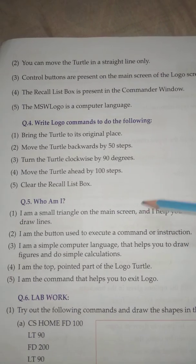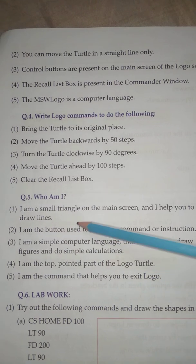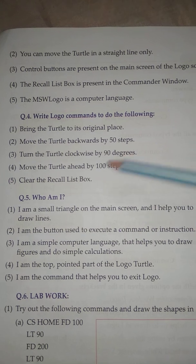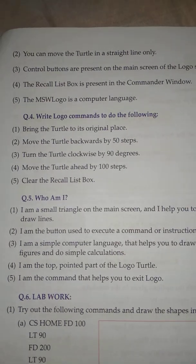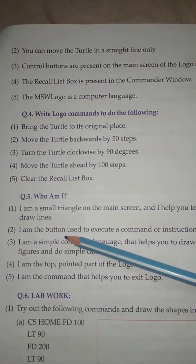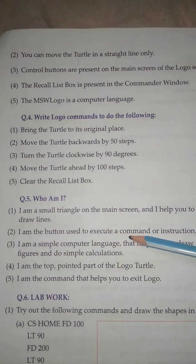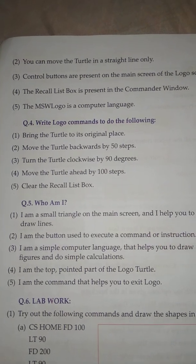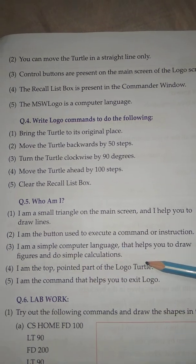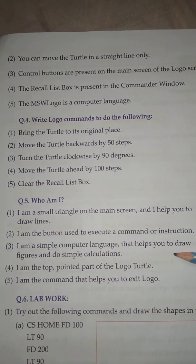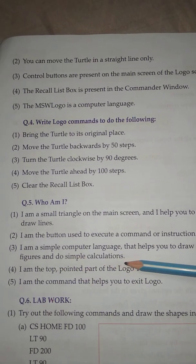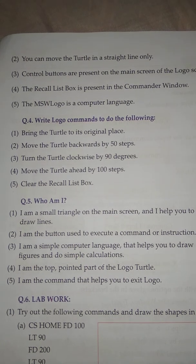Question Number Five: Who am I? Number One: I am a small triangle on the main screen and I help you to draw lines. Answer: Turtle. Number Two: I am the button used to execute a command or instructions. Answer: Execute. Number Three: I am a simple computer language that helps you to draw figures and do simple calculations. Answer: MSW Logo.